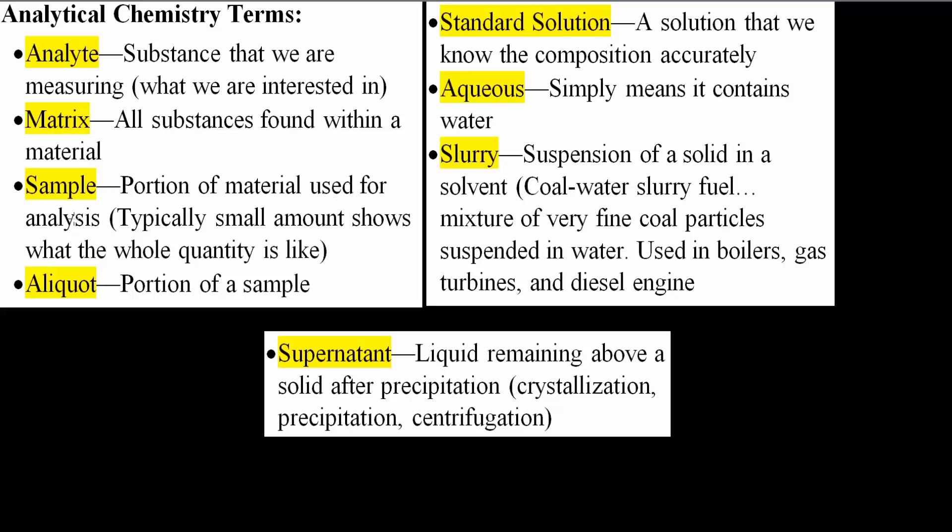Matrix: all substances found within a material. Sample: a portion of material used for the analysis. Typically a small amount shows what the whole quantity is like.